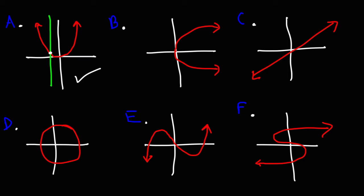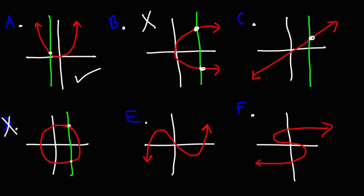Graph a is a function. Graph b is not a function because it touches the vertical line at two points. Graph c is a function — it touches it at one point. Graph d does not pass the vertical line test, so that is not a function. For graph e, if you draw a vertical line anywhere on it, it only touches at one point, so that's a function. For graph f, it touches the vertical line at three points, so f is definitely not a function.